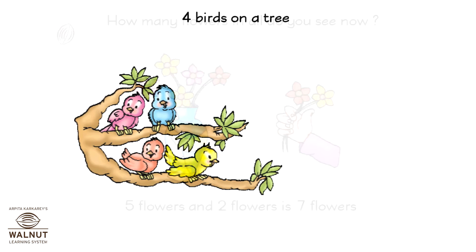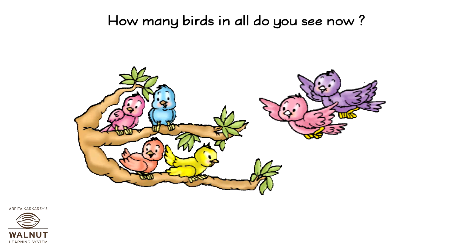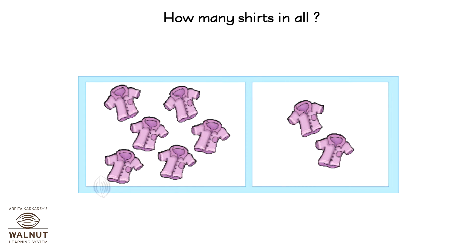Four birds on a tree. Two more birds fly in. How many birds in all do you see now? Four birds and two birds is six birds.